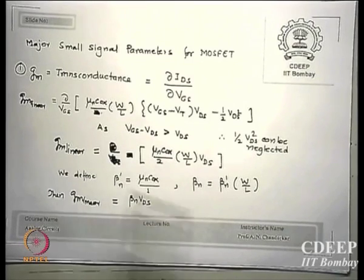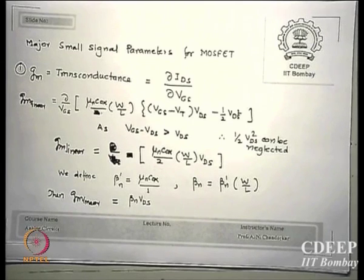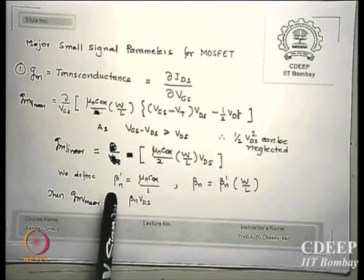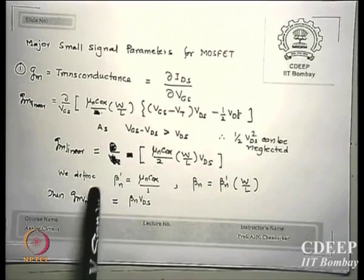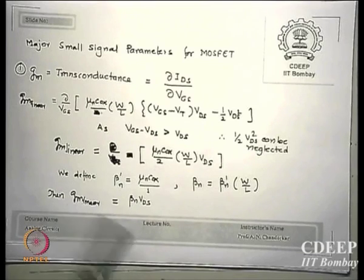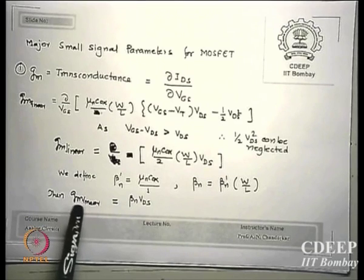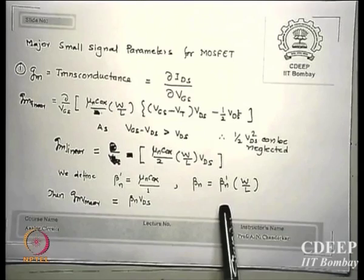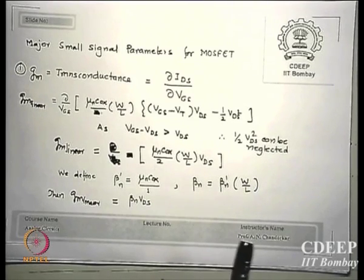GM linear is essentially like a resistance — in the linear region, the IDS-VDS characteristic is proportional to a resistance. This is also written using the shorthand beta. Note that my symbols differ from textbook symbols: where books use KN or KP, I write beta_N and beta_P. Beta_N is defined as beta_N' times W/L to simplify expressions. Beta has units of amps per volt squared.